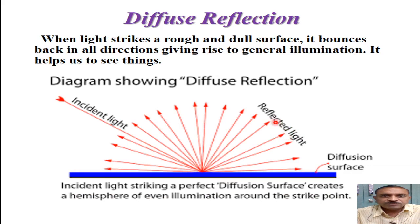Now, let us see what is diffuse reflection. When light strikes on a rough and dull surface, then it bounces back in all directions, giving rise to general illumination.